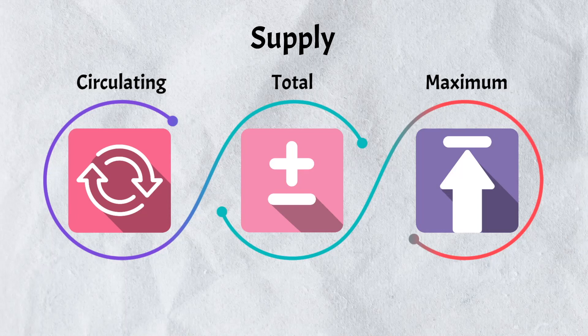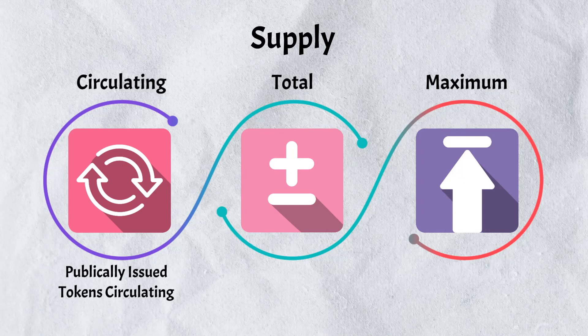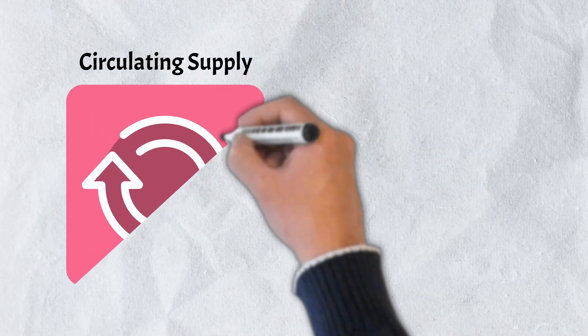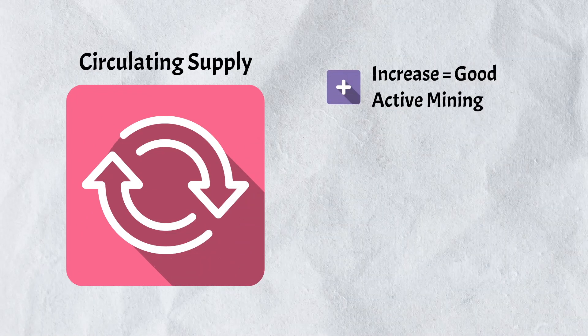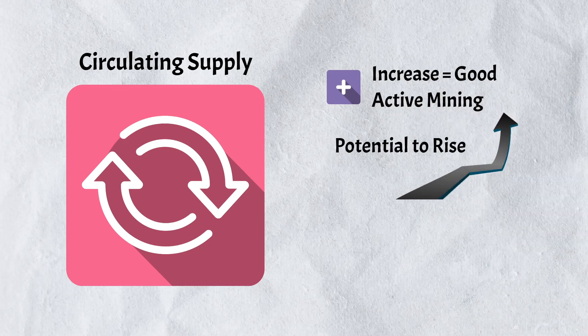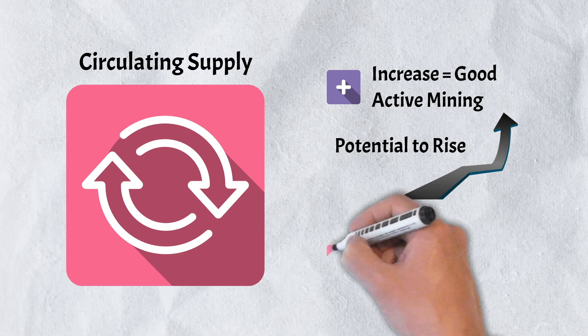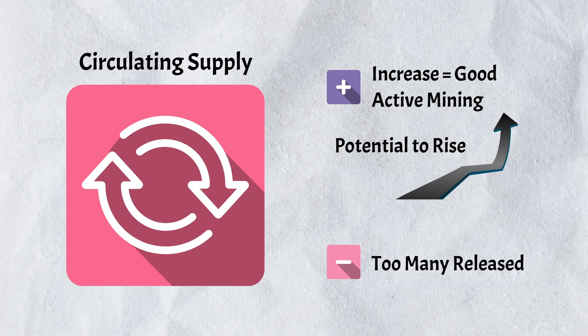The number of publicly issued tokens that are currently in circulation is referred to as the circulating supply. An increase in the circulating supply of a token could be taken as a good indication of active mining. With an increase in circulating supply, one could expect the value of the token to go up. On the flip side however, if too many tokens are released at once or released too often, it could have a negative impact on the token's value.